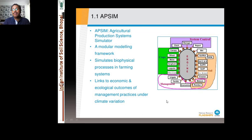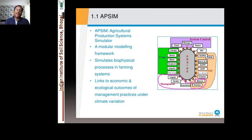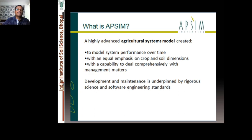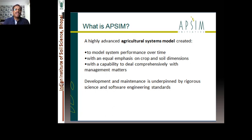That means changing temperature, changing rainfall patterns, or changing carbon dioxide concentration — this model will help you simulate the effect of different climate parameters on climate change impacts on crops and cropping systems. APSIM is a highly advanced agricultural systems model created to model system performance over time, with equal emphasis on both crop and soil dimensions — taking care not only of crops but also soils.